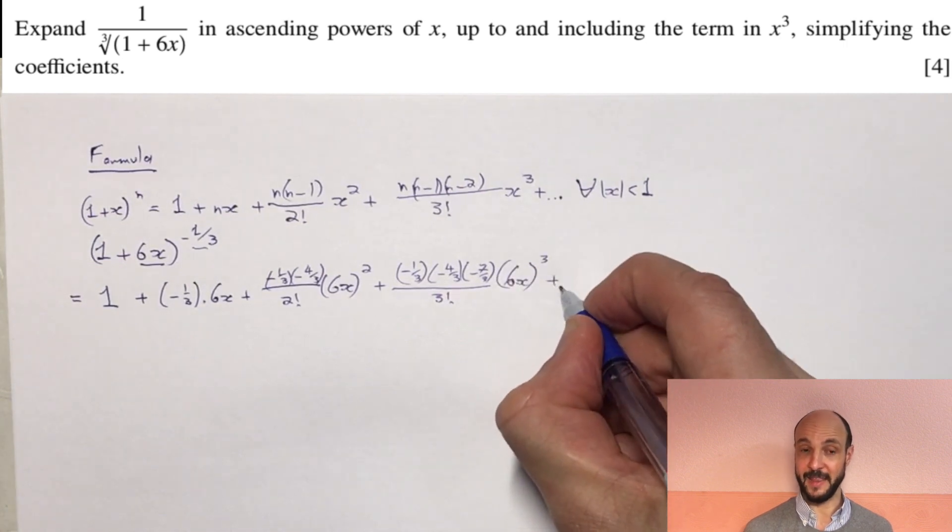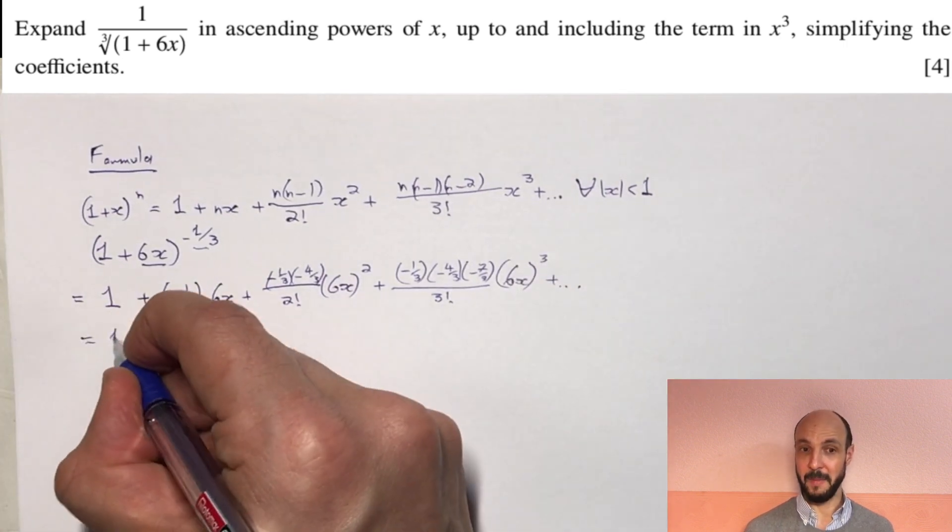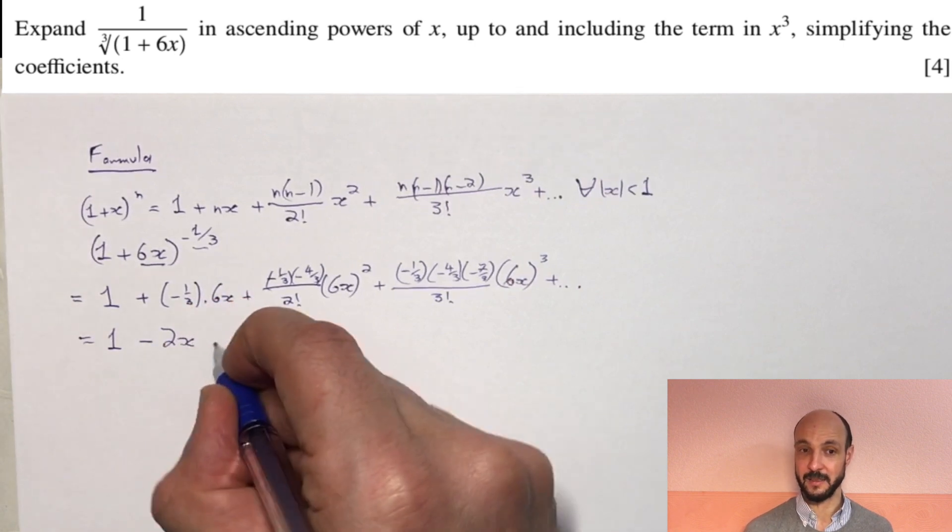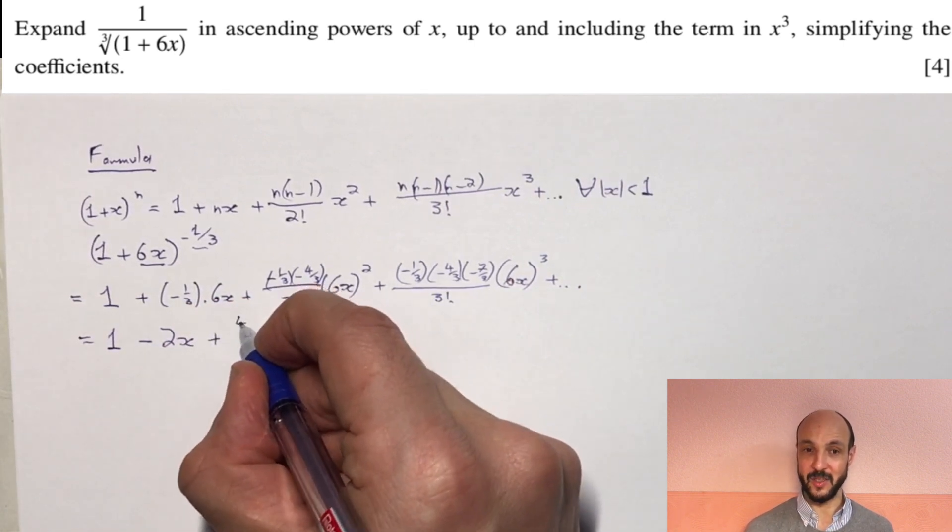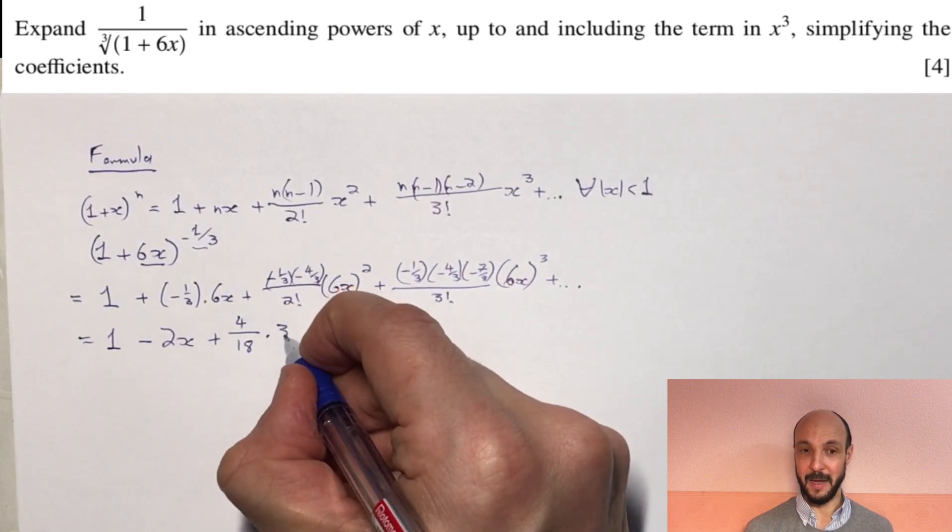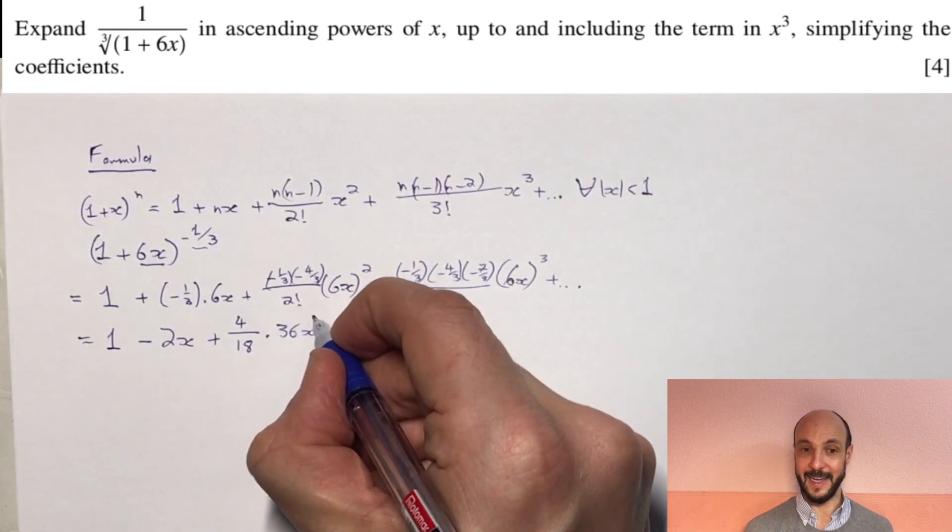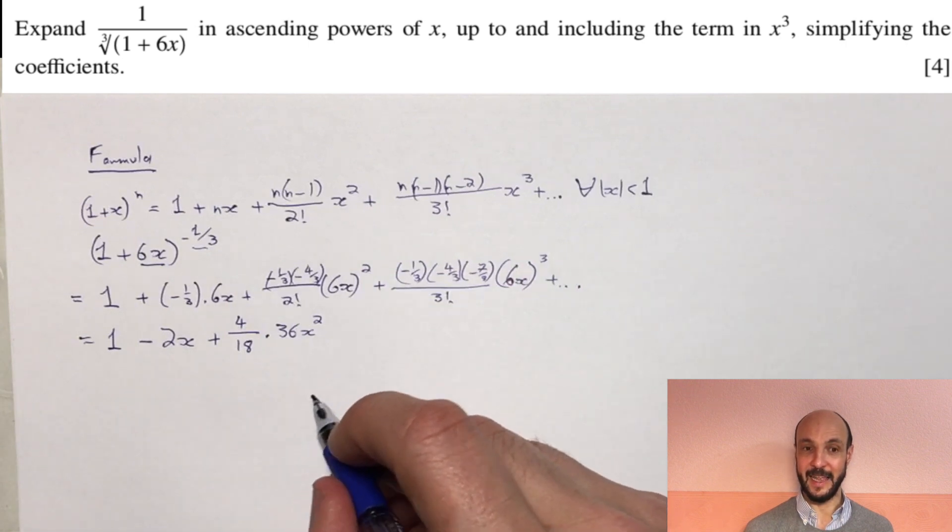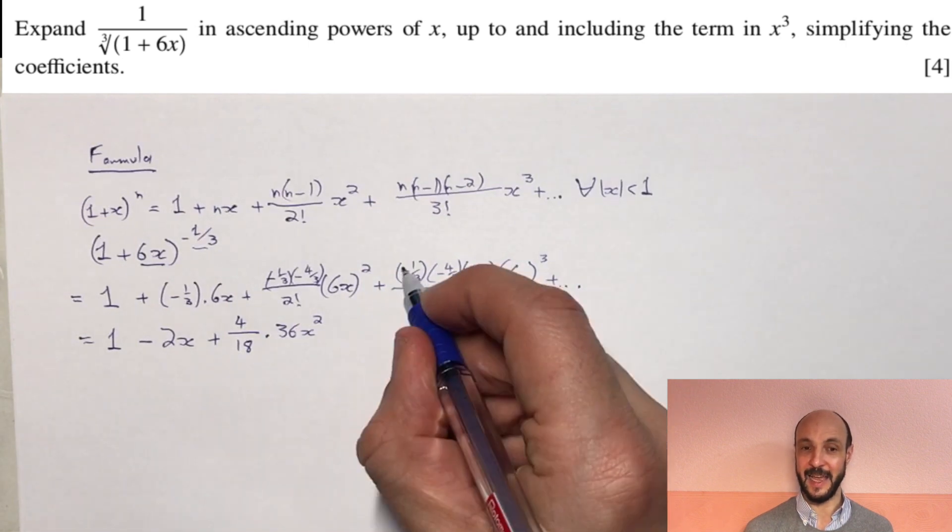So if we simplify that, we've got 1 minus 1 third times by 6 is minus 2, so 1 minus 2x. And then we've got minus 1 third times by minus 4 thirds, which gives us 4 over 9. That's divided by 2, which gives us altogether 4 over 18. And that's times by 36x squared.